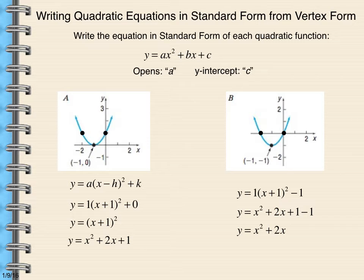So I think you would agree that if you're given a graph, it's easiest to turn that into vertex form first. And from there, you can change it to standard form.